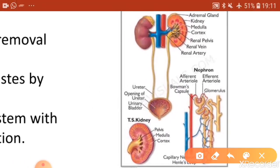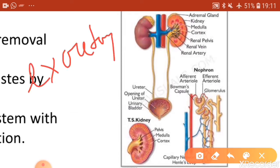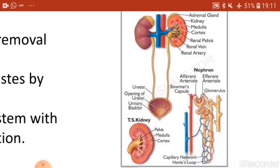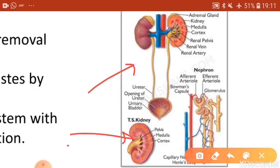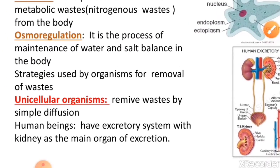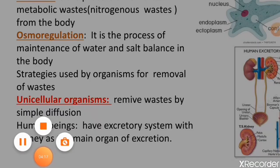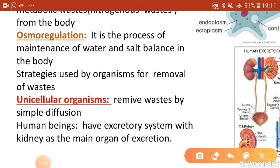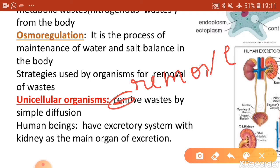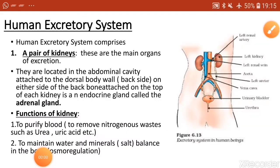In multicellular organisms like us, a complex organ system is present called the excretory system. Human beings have an excretory system with kidneys as the main organ of excretion. So while unicellular organisms remove waste by simple diffusion, multicellular organisms have a dedicated excretory system with kidneys as the main organ.